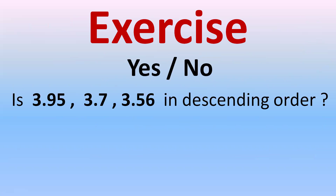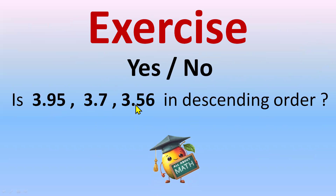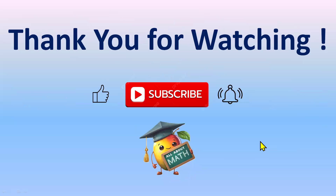Now it's your turn for a workout. The question is: is 3.95, 3.7, and 3.56 in descending order? Descending means big to small — is this correct? Write 'yes' in the comment section if it's correct, or 'no' if it's wrong. The whole part is the same, so compare the tenth place. Write your answer in the comments! Thank you for watching — please subscribe, like, and hit the bell icon for notifications of upcoming videos. Bye bye!